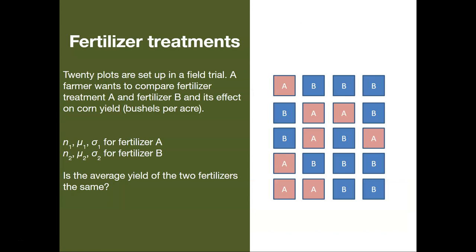To look at this more in depth, we're going to take a look at fertilizer treatments. We're going to assume that we set up 20 plots in a field trial. A farmer wants to compare the fertilizer treatment A versus the fertilizer treatment B and its effect on corn yield. And we'll measure corn yield in terms of bushels per acre. So we'll have different parameters for each sample: the number of observations, the population mean, and the standard deviation for fertilizer A, and then the same information for fertilizer B. What we really want to know is does the fertilizer type matter? Is the average yield of the two fertilizers the same?